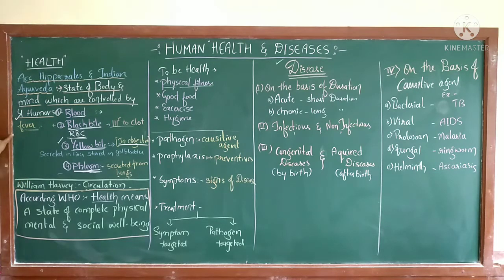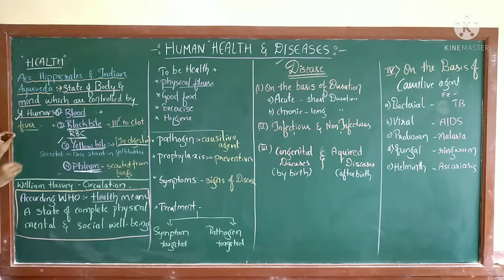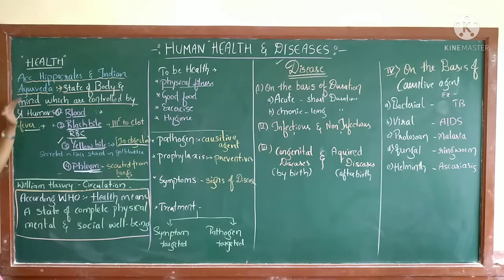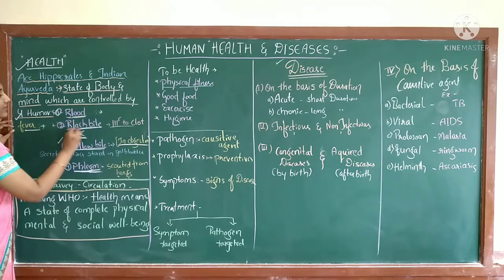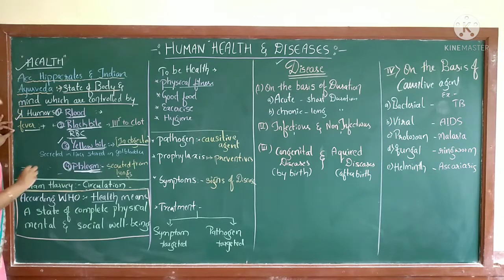There was a concept of good humor and bad humor. If a person had more black bile, he would get fever. This was the concept of the ancient period. This is the definition of health according to Hippocrates and Indian Ayurveda, and these are the four humors on the basis of which health was decided in that era.